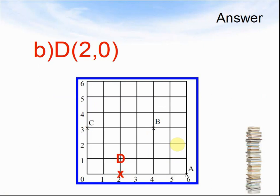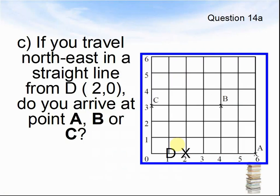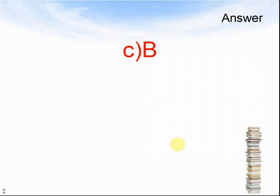Let's look at the next question. If travels north-eastish in a straight line from D to 0, do you arrive at point A, B, or C? Pause the video until you have made a decision. Here is the answer. You would end at B.